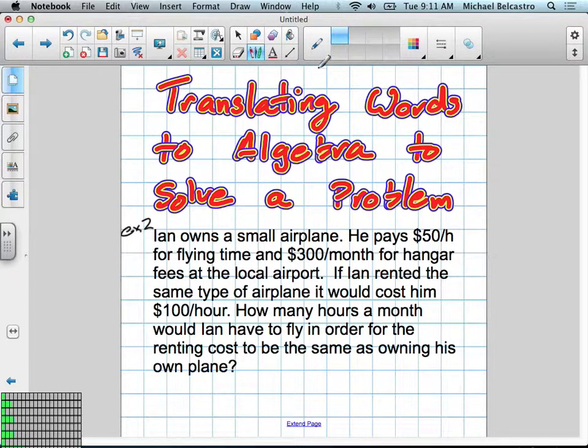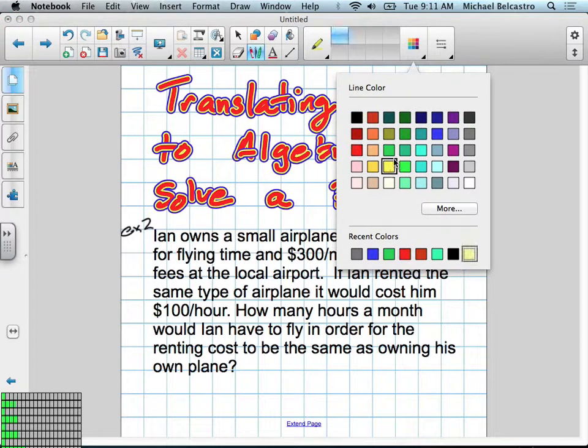Whenever you do a word problem, go over it twice. So I've read it once. I have the gist of the information. What I'm going to do next is go and find important points.